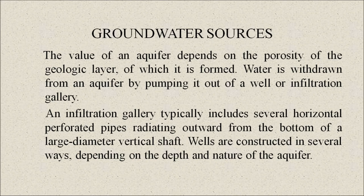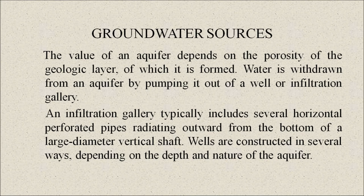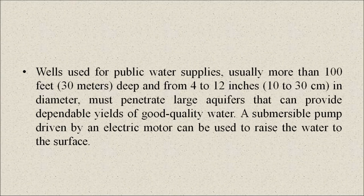Now, global groundwater sources. The value of an aquifer depends on the porosity of the geologic layer of which it is formed. Water is withdrawn from an aquifer by pumping it out of a well or infiltration gallery. An infiltration gallery typically includes several horizontal perforated pipes radiating outward from the bottom of a large-diameter vertical shaft. Wells used for public water supply are usually more than 100 feet deep and 4 to 12 inches in diameter, and must penetrate large aquifers that can provide dependable yields of good quality water. A submersible pump driven by an electric motor can be used to raise the water to the surface.